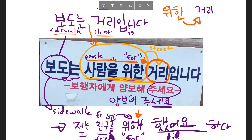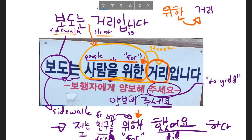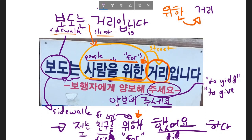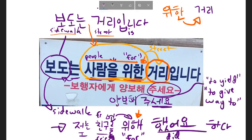What does 양보하다 mean? A common translation is 'to yield.' I don't really love that translation — it's sort of also 'to give way to,' or really 'be careful of,' but I think a better translation is 'to give way to.' Yield is probably the most common translation, but I'm not sure I love it. So who am I yielding to, or what am I yielding for?